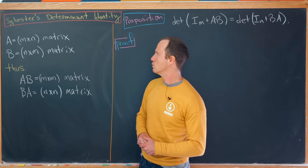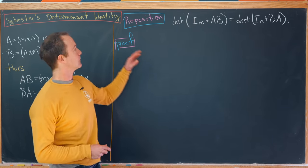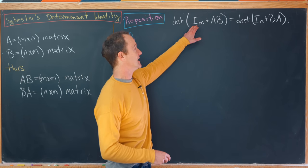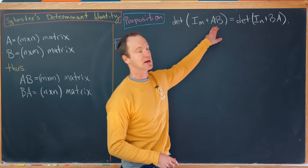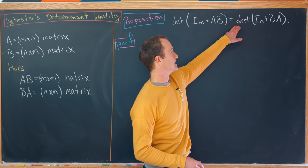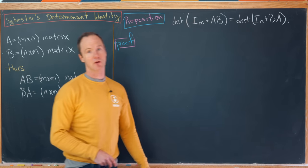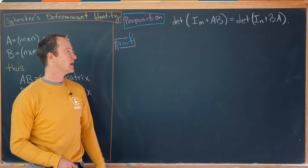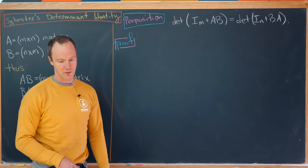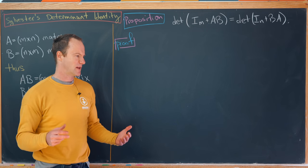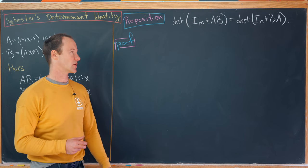So what is this determinant identity? It goes like this: the determinant of the identity matrix plus A times B is the same thing as the determinant of the identity matrix plus B times A, where we're taking the appropriately sized identity matrix. So you might say, how might this be useful?